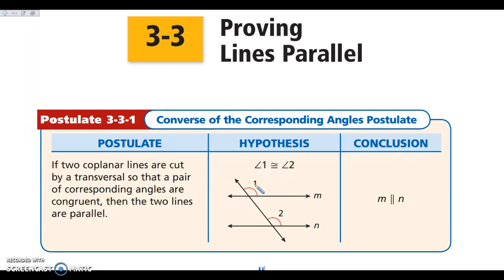Yesterday we said we are given lines are parallel. Today we are saying, what are we concluding? We're concluding that our lines are parallel. The key here is going to be knowing whether you're given lines are parallel or you're proving that lines are parallel — that will tell you the difference between the theorem and the converse. If we are given the lines are parallel, that is the theorem. If we are proving that the lines are parallel, that is the converse.